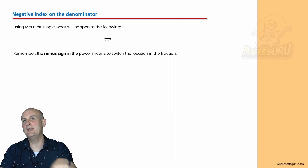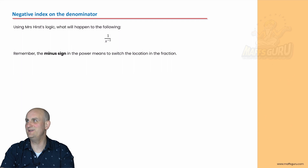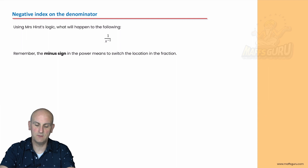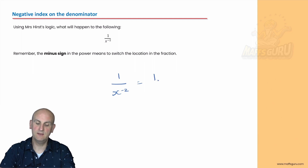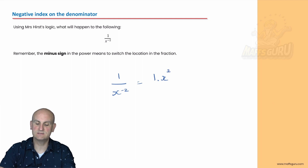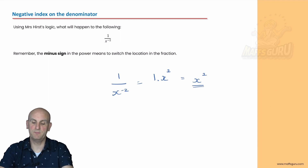Now what's going to happen here by Mrs. Hurst logic? Well it's a negative sign on the bottom of a fraction — I don't want it there. So I'll move it to the top. We have one on x to the minus two. This one was already there — leave it there. I'm now going to move that x to the minus two up to become x squared. So my answer simply becomes x squared. The minus two on the bottom moves to the top and becomes a plus two.